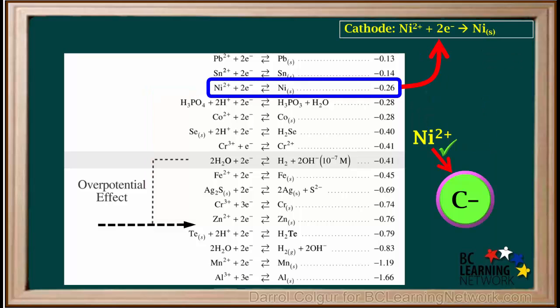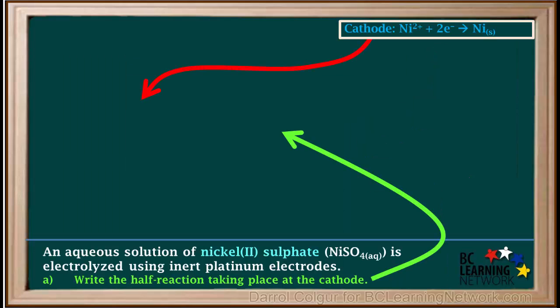And we'll make a note up here that this is the half reaction at the cathode. Now we've answered question A. The half reaction at the cathode is Ni2+ + 2e- gives nickel solid.